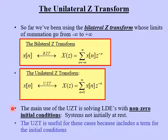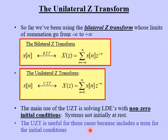The main use of the UZT is solving linear difference equations that have non-zero initial conditions — in other words, systems that are not initially at rest. The reason the UZT works for these cases is because it has a term that accommodates these initial conditions, which we'll see in the next slide.